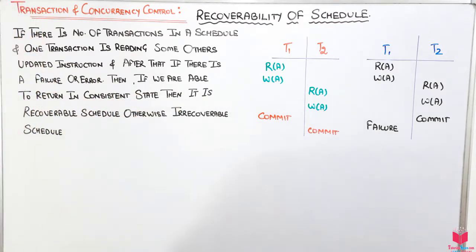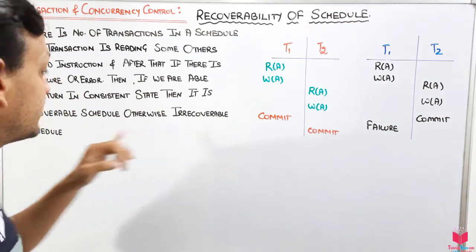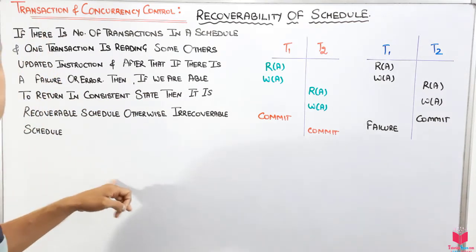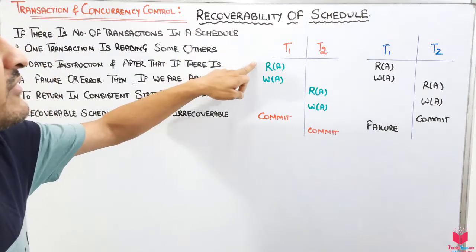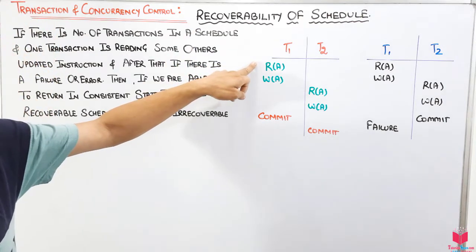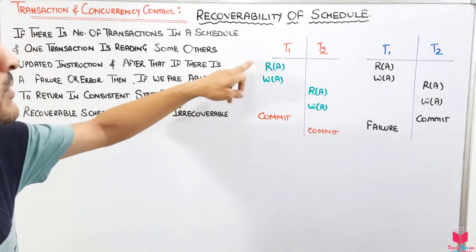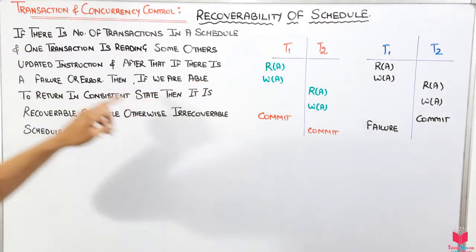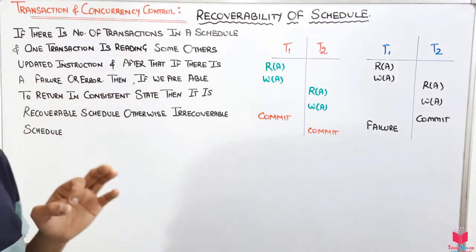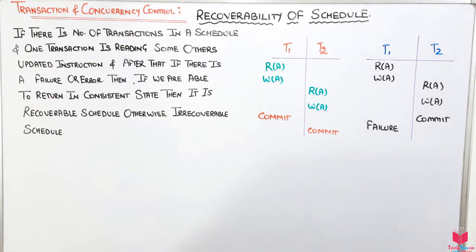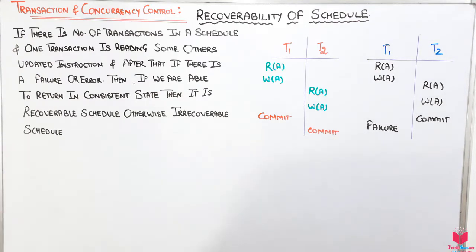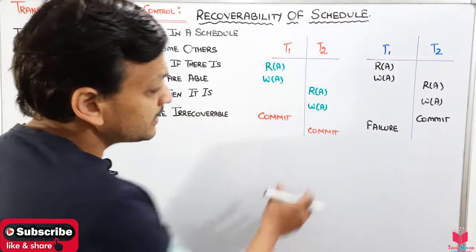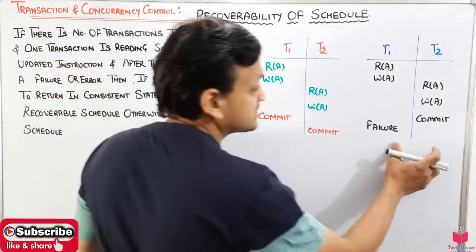Otherwise it is an irrecoverable schedule. After some failure, if we are able to return to the same position where we started, or if we are not returned to the same position but the state is a consistent state, then it is a recoverable schedule. Otherwise it is an irrecoverable schedule. Let's discuss some examples to make this clear.